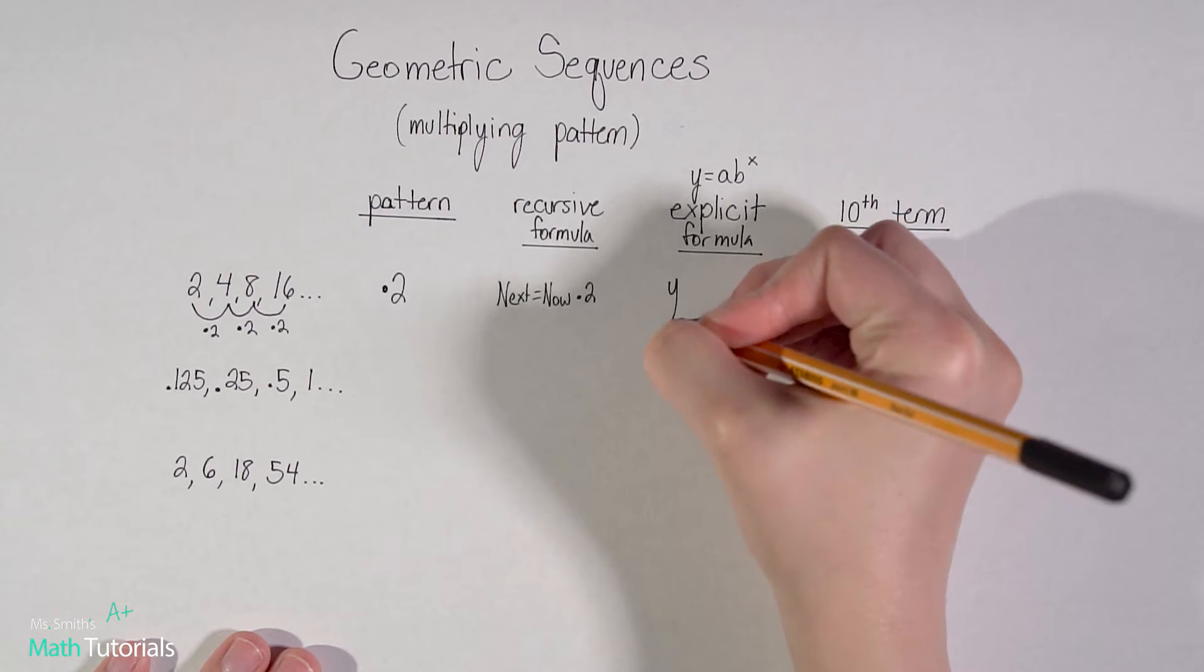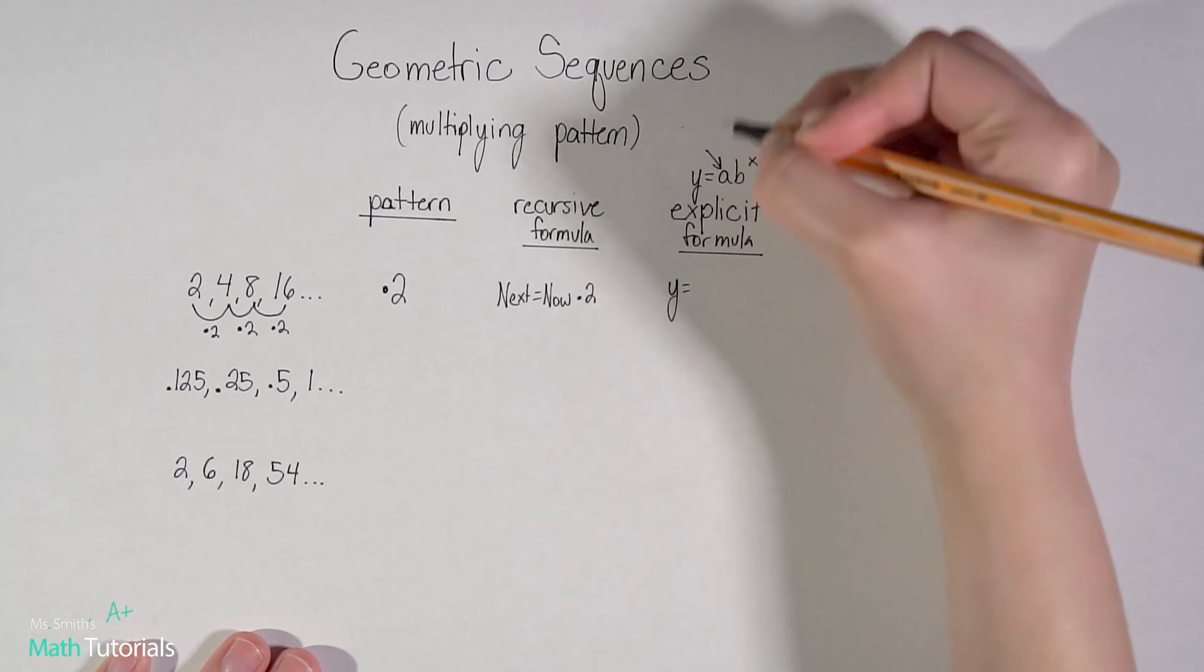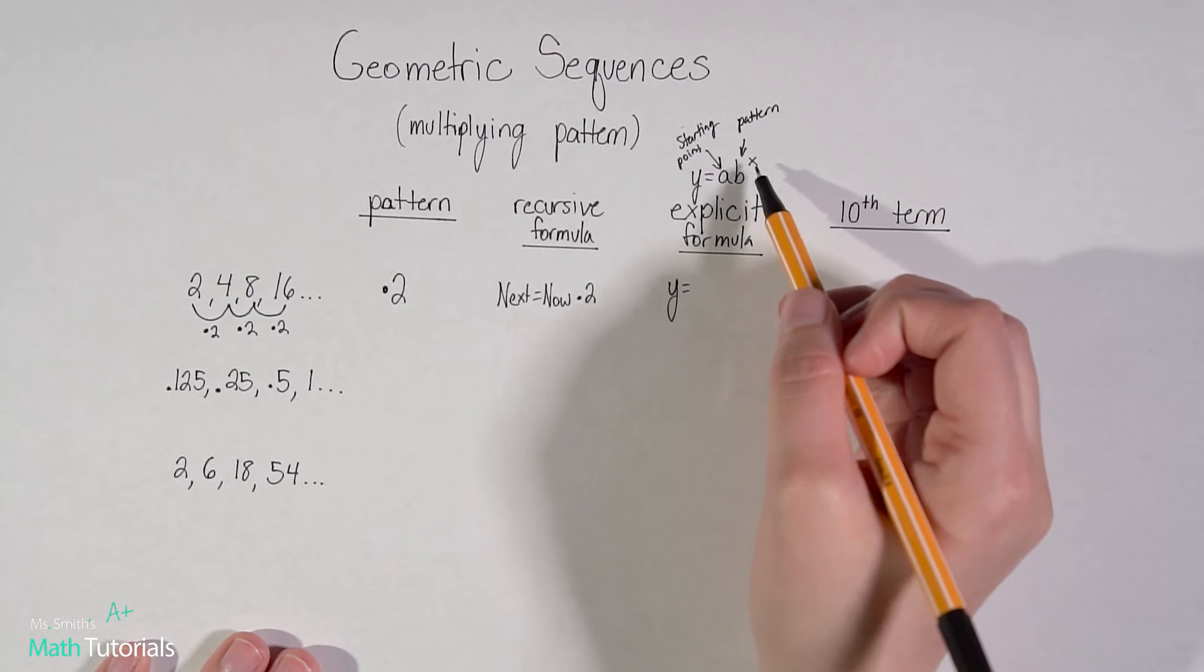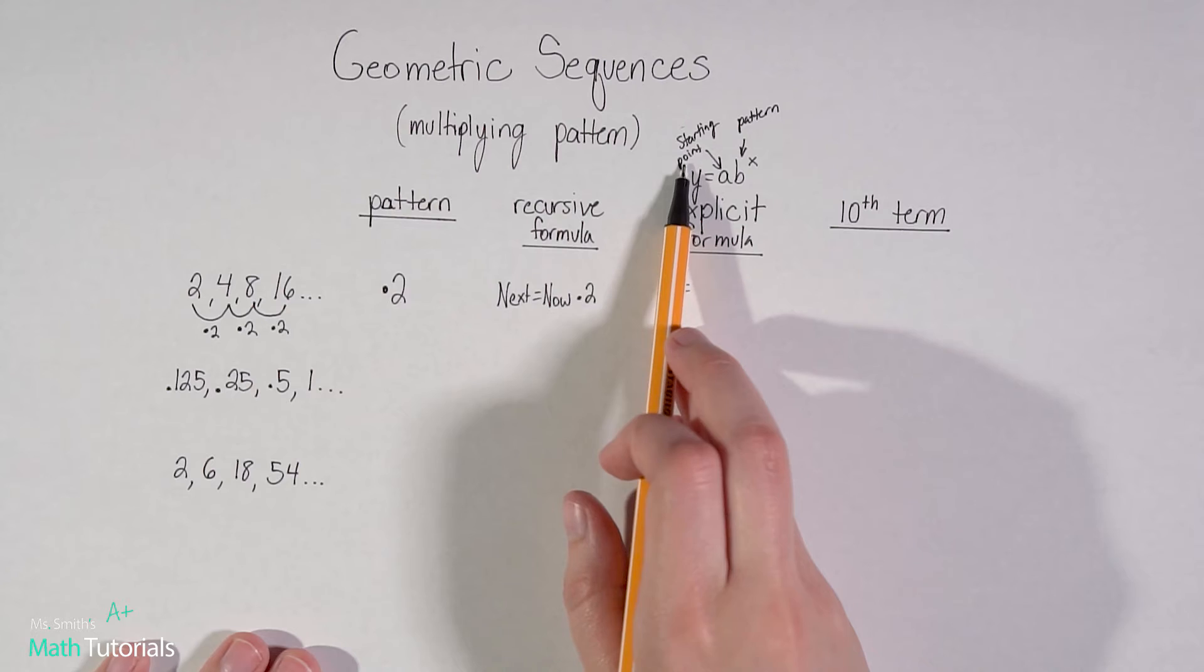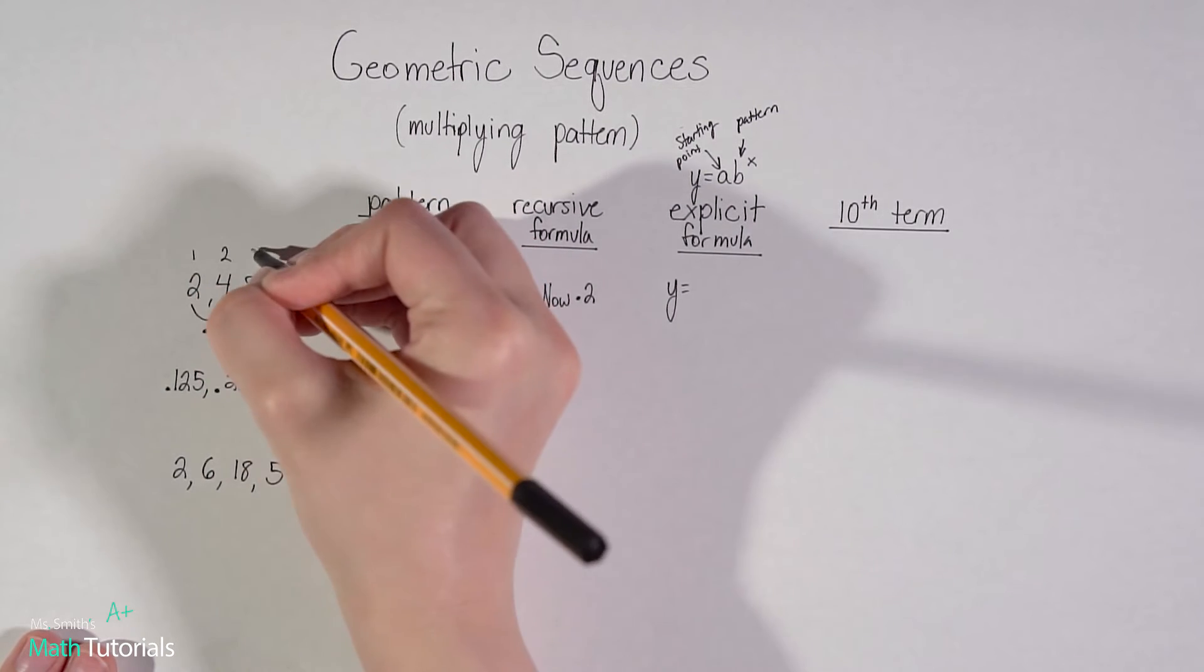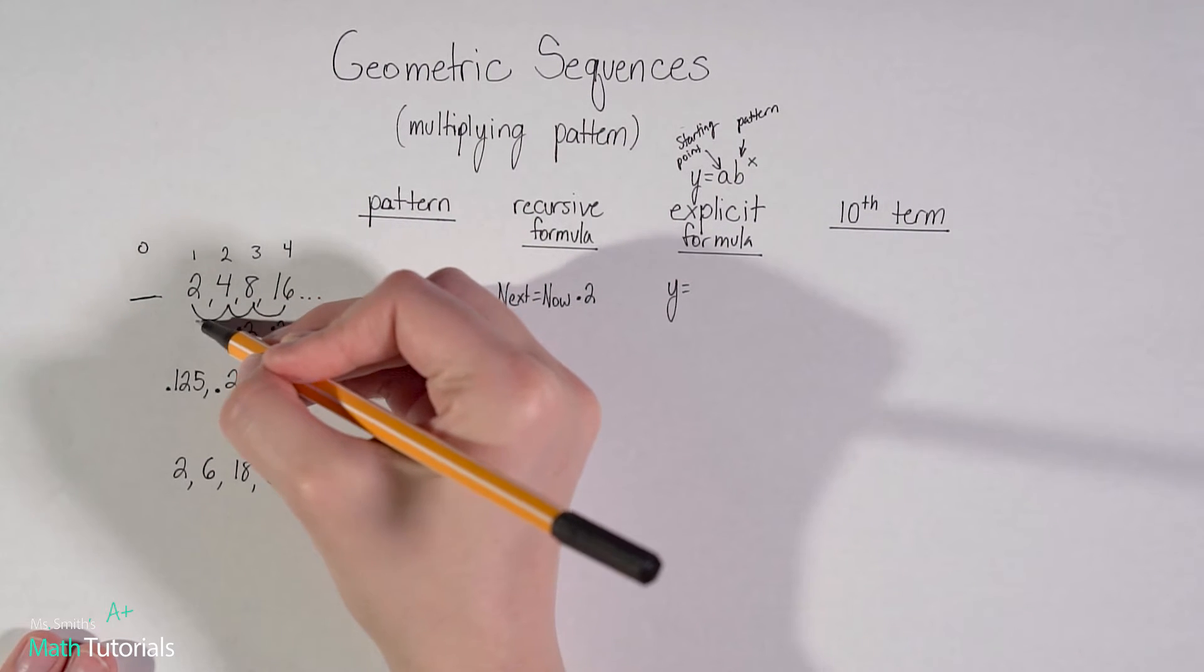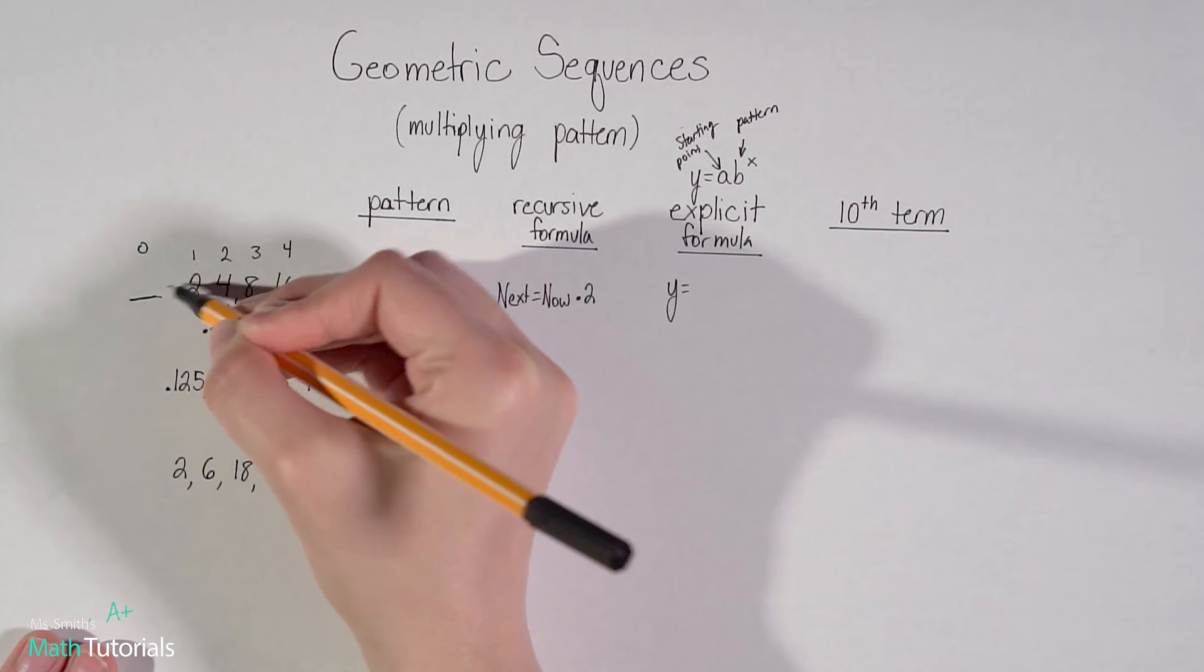For our explicit formula, and I didn't note this on here like I did on the last one, but A is our starting point and B is the pattern. So A will be the starting point, B will be the pattern, X will be once we get into the 10th term. So for A, our starting point. We talked about this with arithmetic sequences that if this is like the first number in the sequence and this is the second number, third number, fourth number, and so on, what would be the zero number? What would be the starting point?